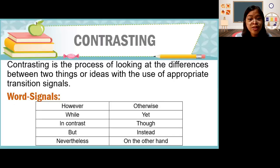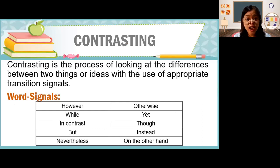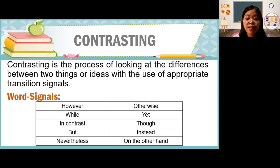Now let us move on to contrasting. If comparing gives the similarities, contrasting is the process of looking at the differences between two things or ideas with the use of appropriate transition signals. Remember that when we contrast, we look at the differences. Here are a few examples of contrasting word signals: however, while, in contrast, but, nevertheless, otherwise, yet, though, instead, on the other hand.